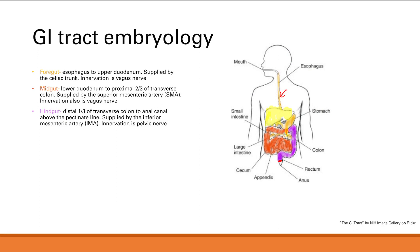To summarize: foregut — celiac trunk; midgut — SMA; hindgut — IMA. For innervation: both the foregut and midgut are innervated by the vagus nerve, and the hindgut is innervated by the pelvic nerve.